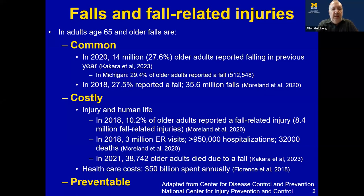The good news is that falls are preventable and they are not an inevitable part of aging. In 2020, about 14 million, or a little more than one in four — 27.6% — of older adults reported having a fall in the previous 12 months. The number in Michigan was a little higher, closer to 30%, with about 512,000 older adults reporting a fall.